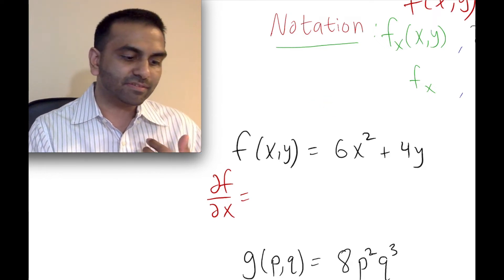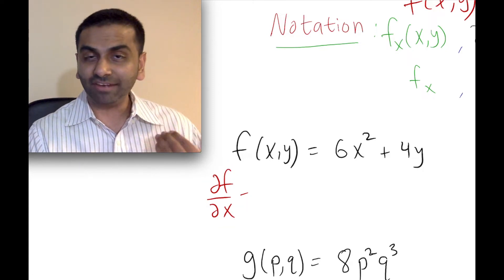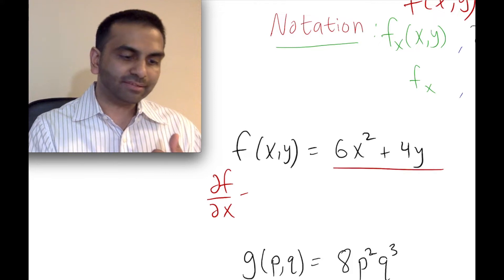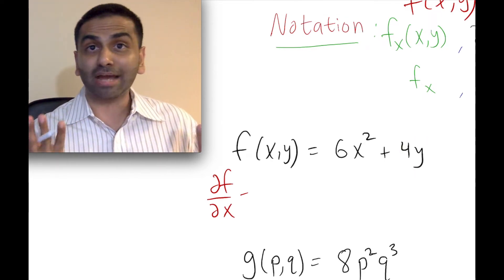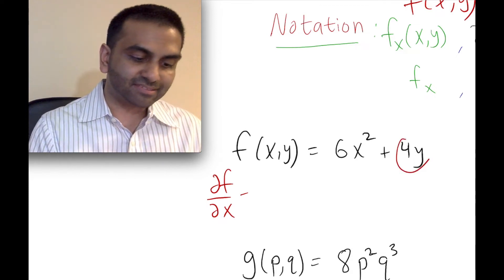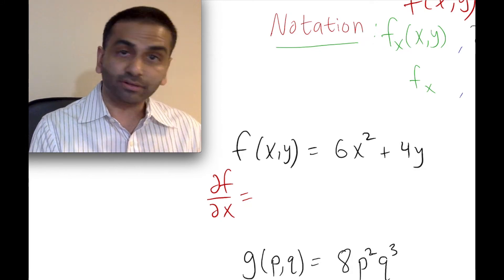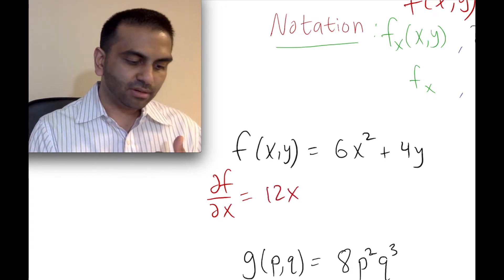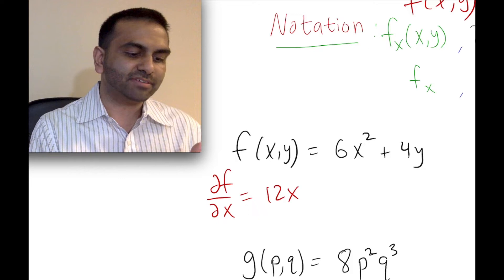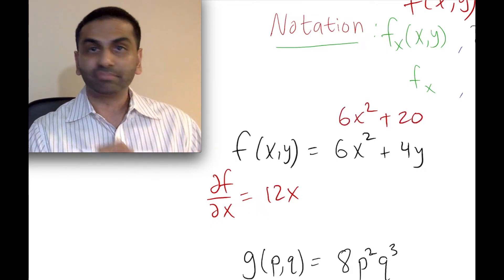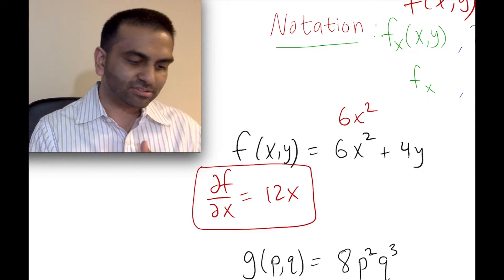So when taking the derivative with respect to x, everything that's not x is treated like a number. For the function 6x² + 4y, I'm reading this as 6x² plus 4 times some constant. Going term by term: the derivative of 6x² is 12x, and the derivative of 4y — since y is a constant — is 0. So this is no different than the derivative of 6x² + 20, which is just 12x. The partial derivative with respect to x is just 12x.